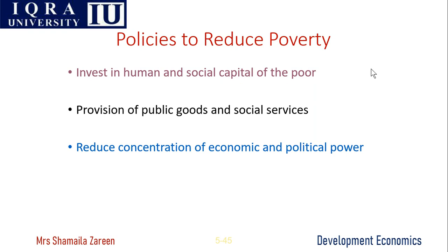Third, moderating the size distribution at the lower level involves policies to reduce poverty: there must be investment in human and social capital of the poor, more skillful workers, provision of public goods and social services for poorer people, and reduction of the concentration of economic and political power so that income is not concentrated among the few.